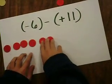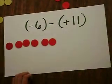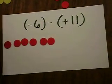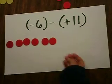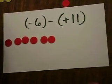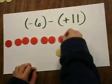First, you model the first integer. Since we're subtracting positive 11, but there are no positives here, you need to make enough zero pairs so that you can subtract positive 11.